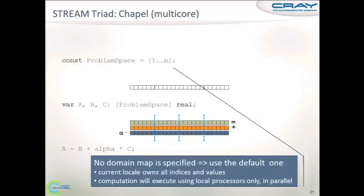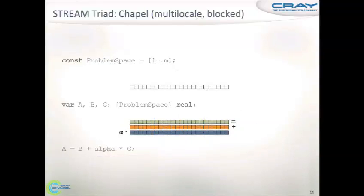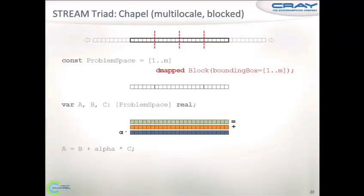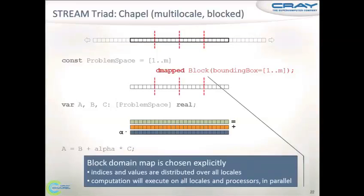Let's say we have multiple locales and we want to distribute in a block fashion. All you need to do is take that same code and put in a domain map annotation — in this case, the block domain map that comes from the library. Once we've done that, our data is partitioned in block fashion across the four locales. When we run the computation, it will run in parallel on each locale, depending on how many cores we have. This domain map annotation is the only thing you need to change in this code for this pretty drastic behavior change.